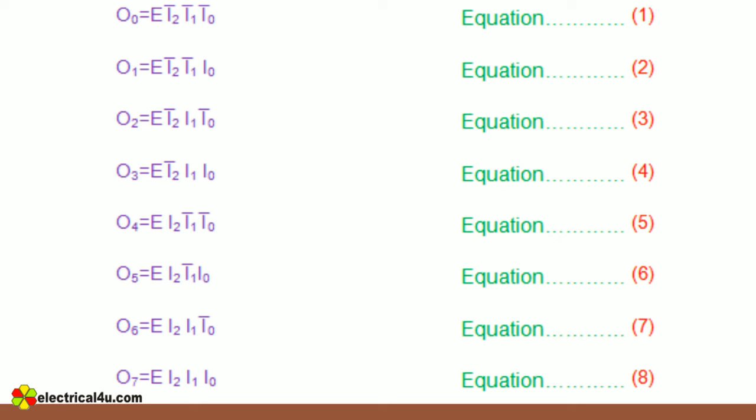O2 equals E I2 bar I1 I0 bar, and that is equation 3. O3 equals E I2 bar I1 I0, and that is equation 4. O4 equals E I2 I1 bar I0 bar, and that is equation 5. O5 equals E I2 I1 bar I0, and that is equation 6.